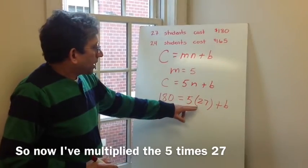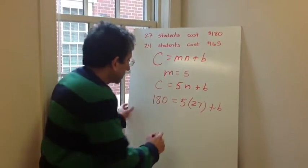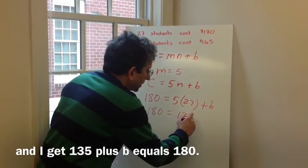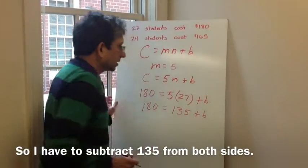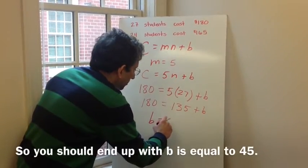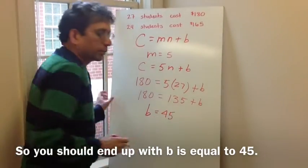Now, I've multiplied the 5 times 27, and I get 135 plus b equals 180. So if you subtract 135 from both sides, you should end up with b is equal to 45.